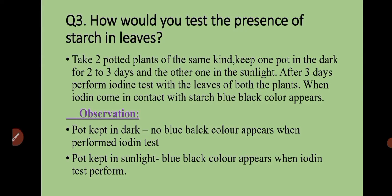When we keep one plant in the dark, there is no sunlight, so photosynthesis does not occur and no food is prepared. When the plant is in sunlight, photosynthesis occurs and food is prepared. So after the iodine test, the leaf kept in dark will not show the blue-black color because there is no starch — no photosynthesis means no food. The pot kept in sunlight shows blue-black color when the iodine test is performed, because photosynthesis creates carbohydrates and later starch, and iodine turns blue-black on contact with starch.